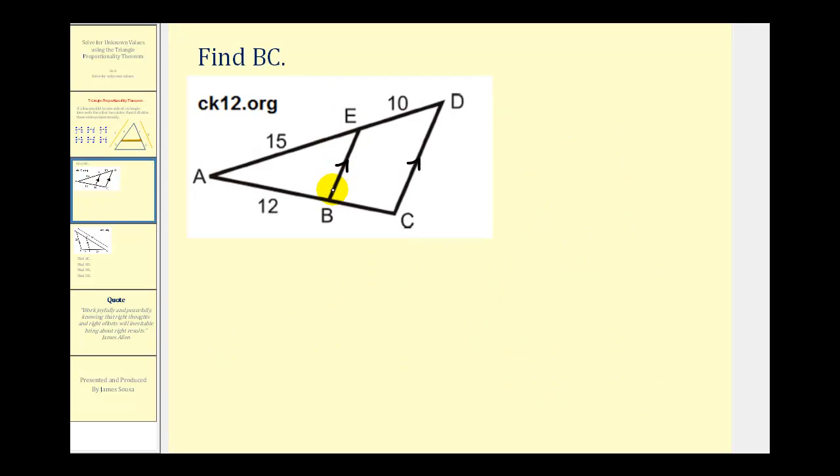In this problem, notice that segment BE is parallel to segment CD, and we want to determine the length of segment BC. Let's go ahead and label this with an X here. So this example is pretty straightforward. This parallel line cuts these two sides of the triangle so that the segments are proportional, which means that X to 12 would be equal to 10 to 15.